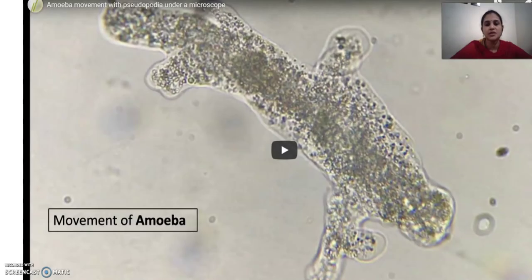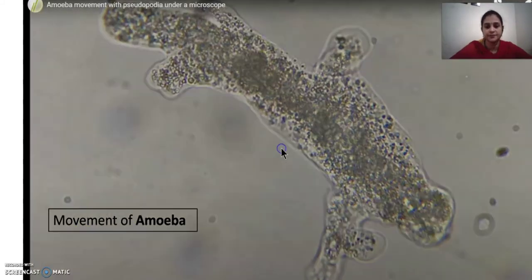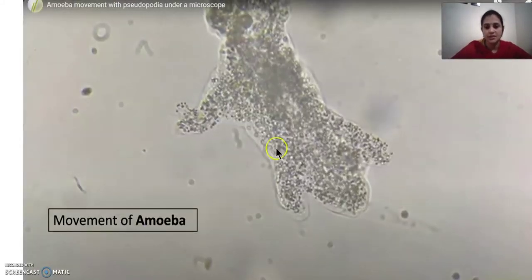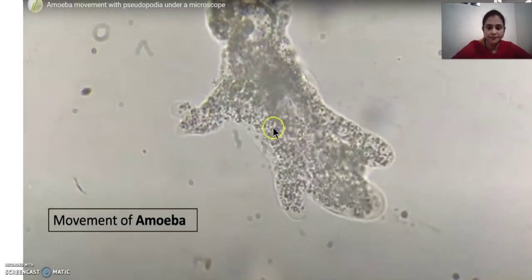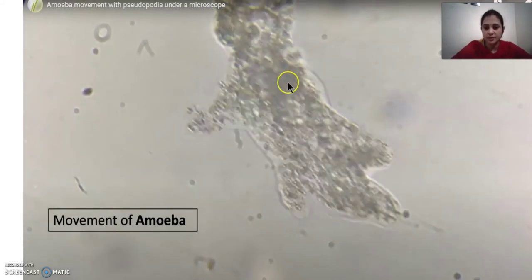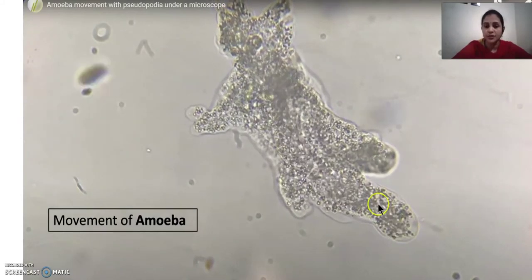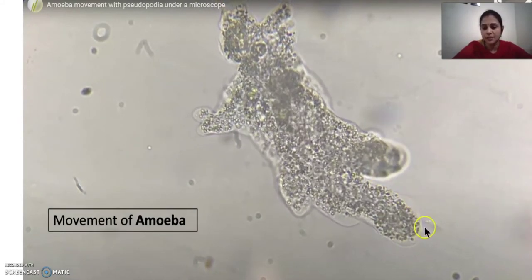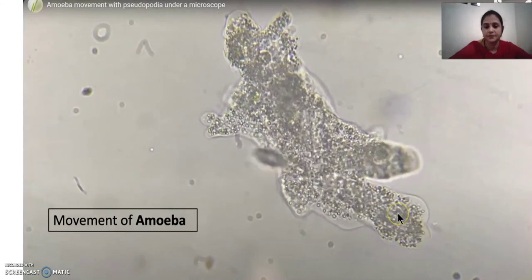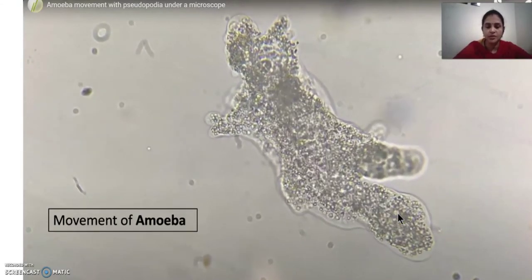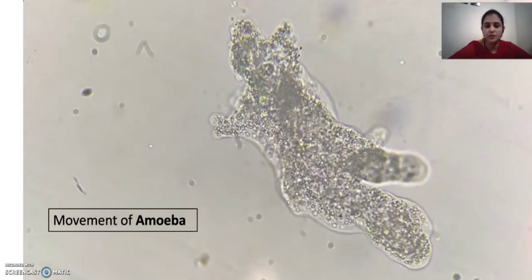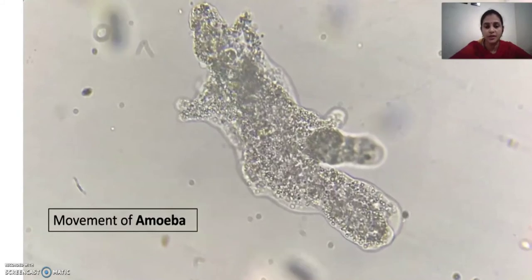In the next slide you can watch a video of the movement of amoeba, taken from YouTube. This is an amoeba, and this is the cytoplasm. As you can see, the cytoplasm is flowing into one direction, the pseudopodium is extending, and the amoeba is moving towards that direction. You can observe this only under a microscope.